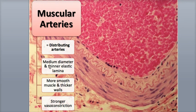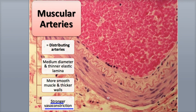but a thinner external elastic lamina, which limits their ability to recoil. The abundance of many layers of smooth muscle gives the muscular arteries better control of blood flow, permitting more vasoconstriction and vasodilation.